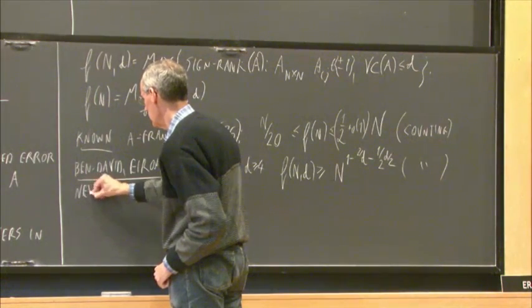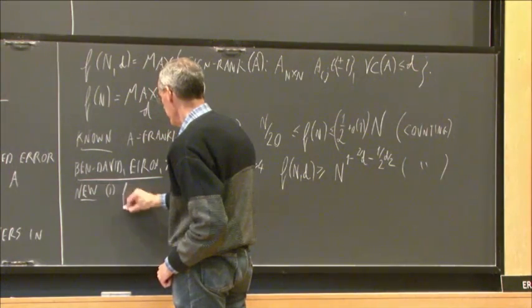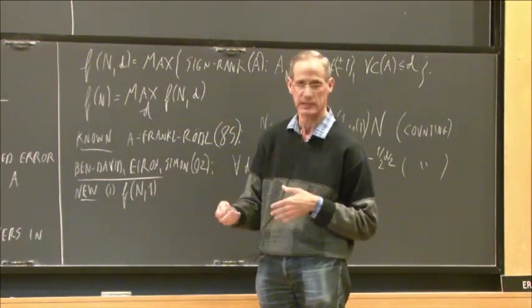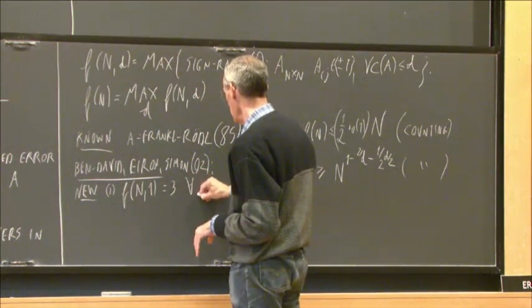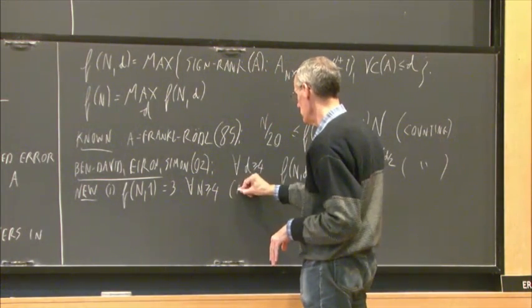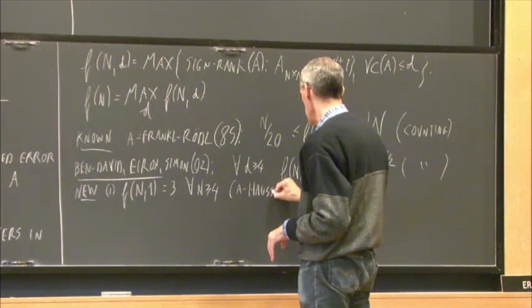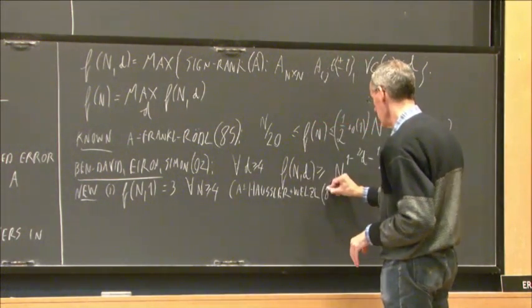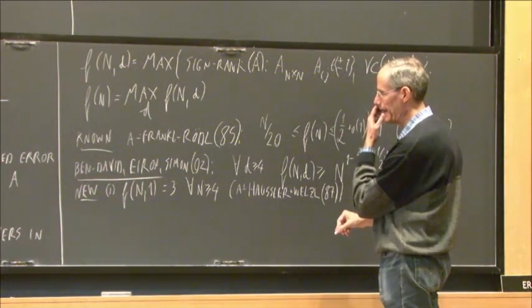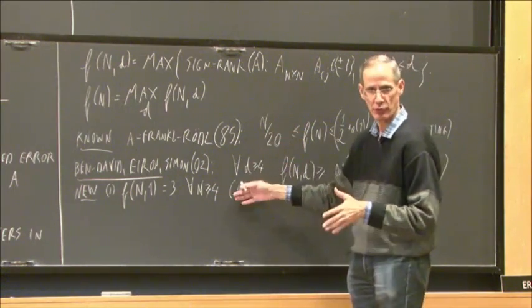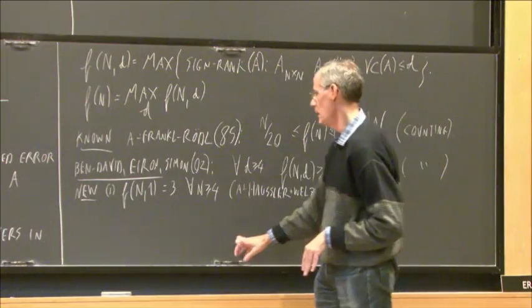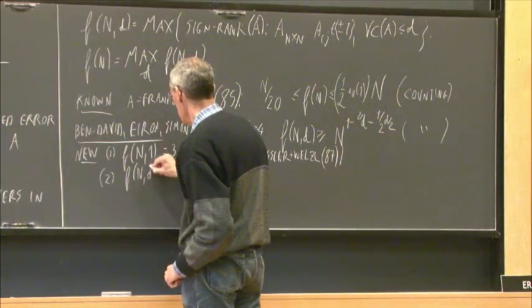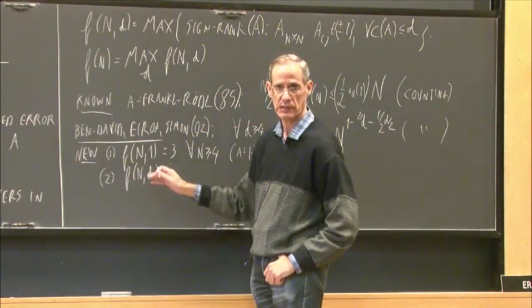Now let me mention some new bounds for f(n, d). When VC dimension is 1 it is well understood — f(n, 1) equals 3 for every n ≥ 4. That is from old papers with Haussler and Welzl in '87. We now give a somewhat better proof, but I won't show this one. A general upper bound is that f(n, d) is at most n^{1 − 1/d} times a constant. If I had to conjecture, I'd say this is tight up to a constant factor for every n and d.